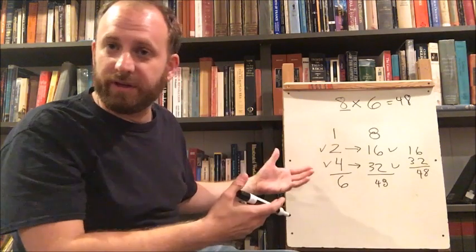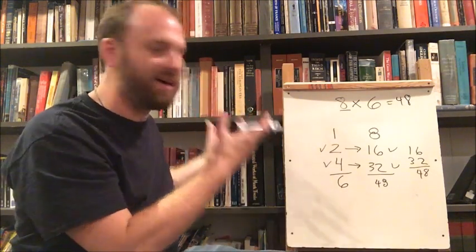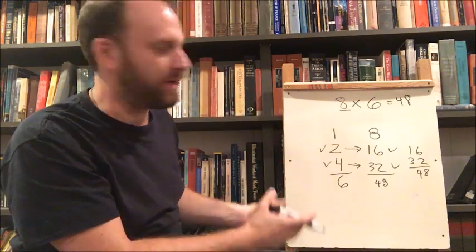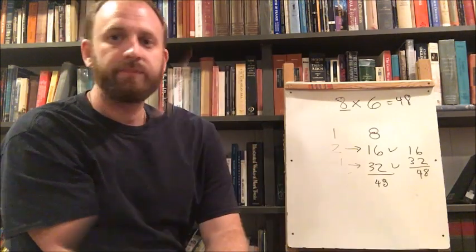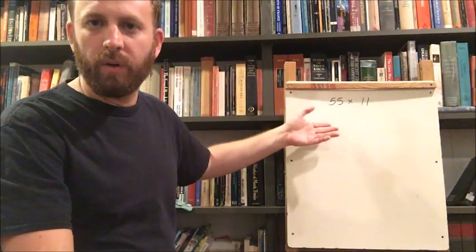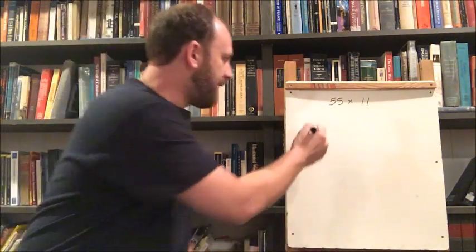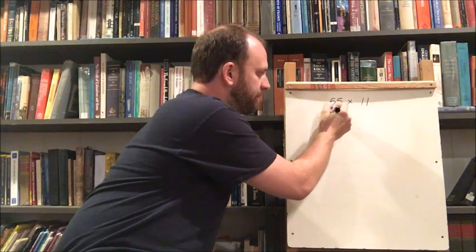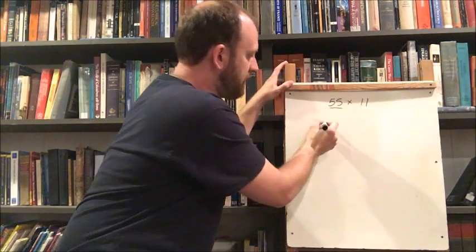Pretty simple. It's convoluted. It's basically using addition to do multiplication but it definitely works. All right for our last one I've given us something a little bit more challenging. 55 times 11. So we're going to start out over here. I'm going to take 55. So we're going to start there.